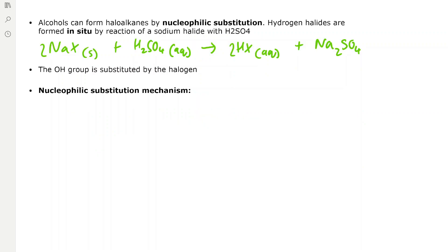Here's the mechanism for the nucleophilic substitution reaction. We start with an alcohol that has a delta-negative oxygen, because oxygen is more electronegative than carbon, meaning the carbon is delta-positive — so we have a dipole on this carbon-oxygen bond. Then we have a hydrogen halide, for example hydrogen chloride.